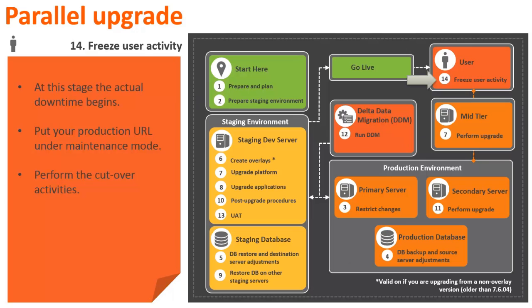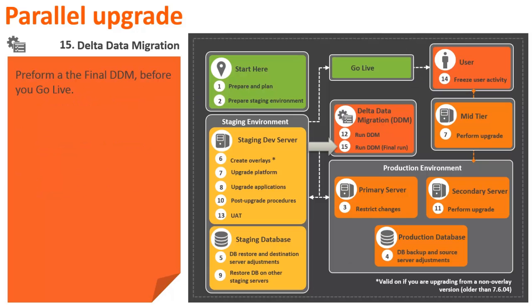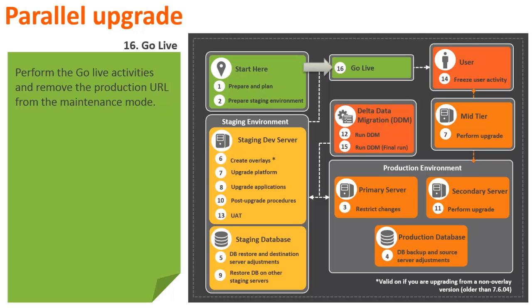In Stage 14, the actual downtime begins. In this stage, you need to put your production URL under maintenance mode and perform the cutover activities. In Stage 15, perform the final delta data migration. Stage 16 is the final stage where you go live. Perform the go live activities and remove the production URLs from maintenance mode.